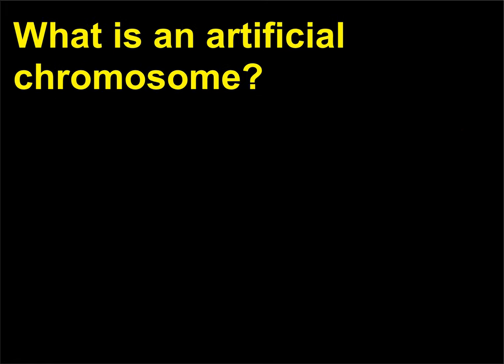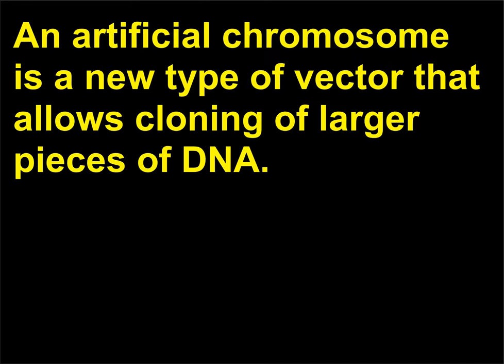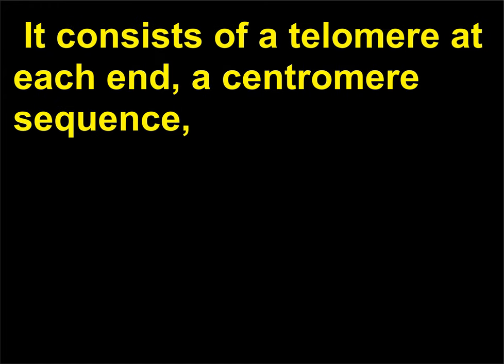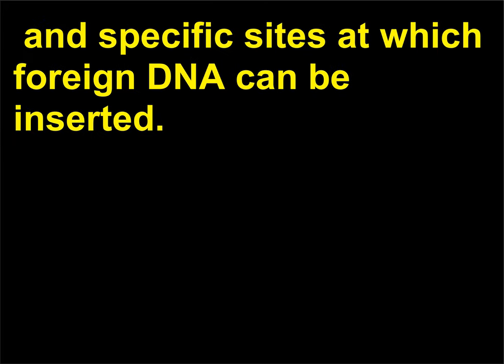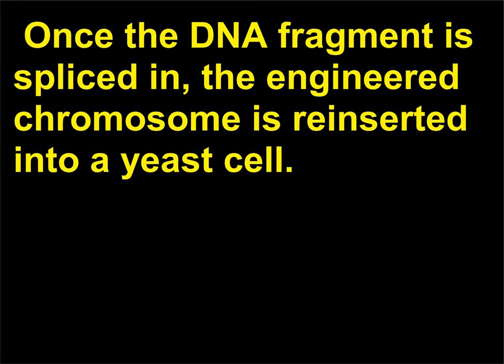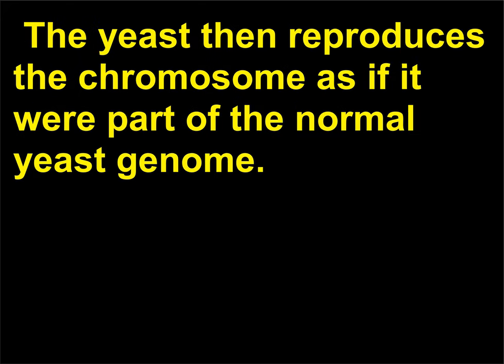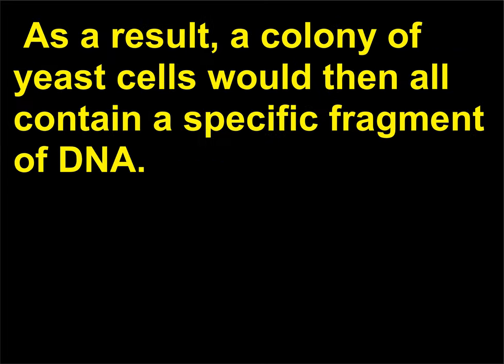What is an artificial chromosome? An artificial chromosome is a new type of vector that allows cloning of larger pieces of DNA. It consists of a telomere at each end, a centromere sequence, and specific sites at which foreign DNA can be inserted. Once the DNA fragment is spliced in, the engineered chromosome is re-inserted into a yeast cell. The yeast then reproduces the chromosome as if it were part of the normal yeast genome, resulting in a colony of yeast cells that all contain a specific fragment of DNA.